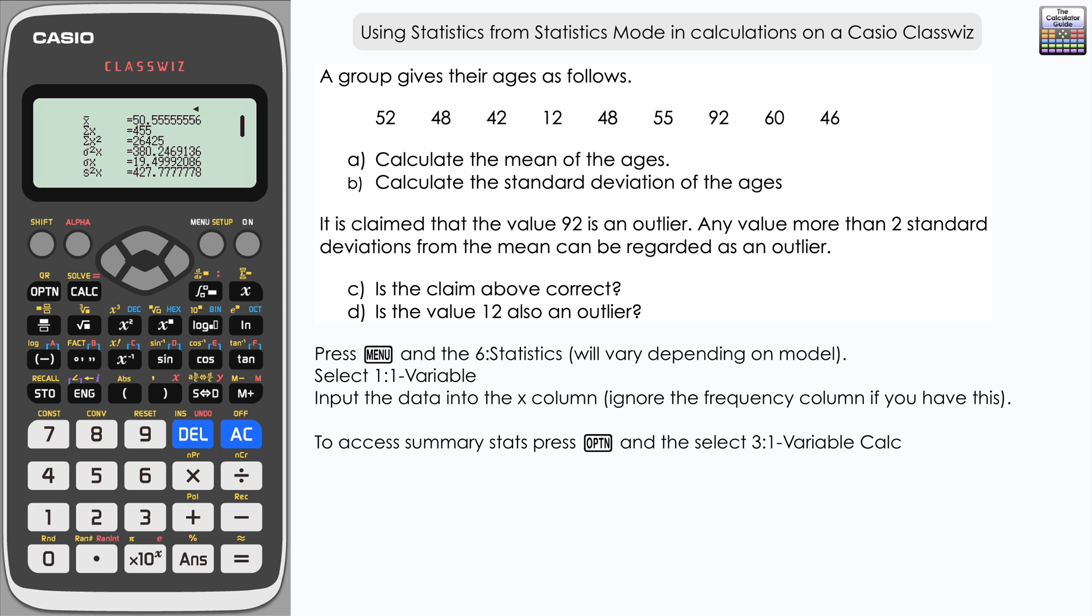Now for part C, we need to find out if the claim that 92 is an outlier is true. We need to take the mean and add two standard deviations onto that and see if that is greater than or less than 92. We're going to use the information in the summary stats, but we need to access it from a different location in the menu to do calculations with it.